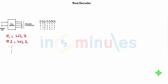Welcome to in 5 minutes. The agenda of this clip is to understand how to make a row decoder at the transistor level. Let's get started here.